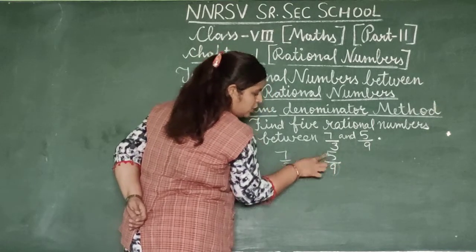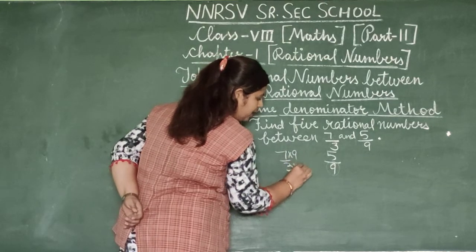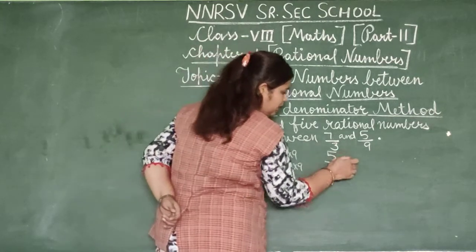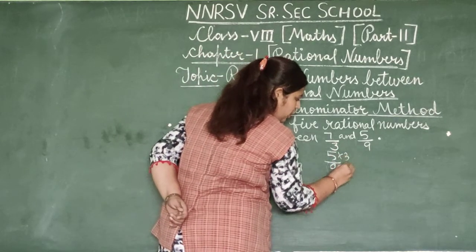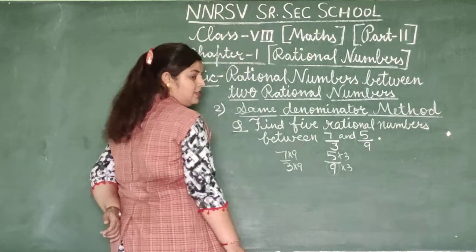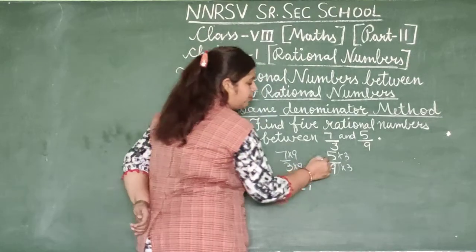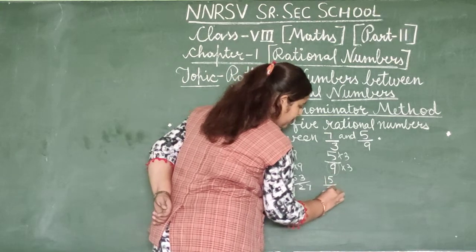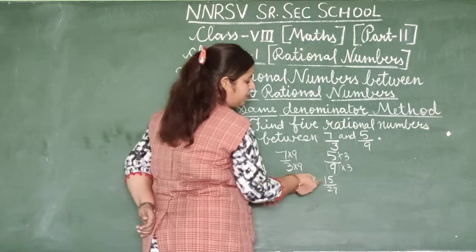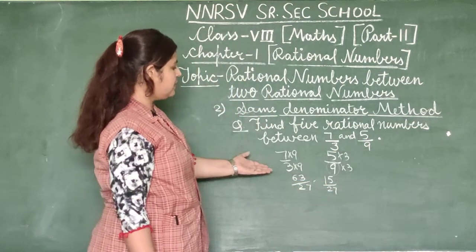In the same denominator method for 7/3 and 5/9: 9 is the denominator of the second fraction, so we multiply the first fraction's numerator and denominator by 9. And 3 is the denominator of the first fraction, so we multiply the second fraction by 3. So 7 times 9 = 63, giving us 63/27, and 5 times 3 = 15, giving us 15/27. There are many numbers between 63 and 15.